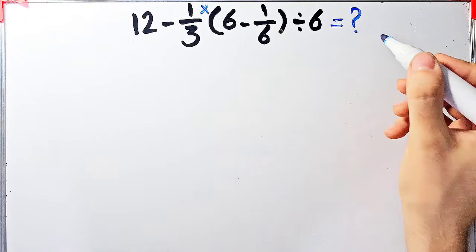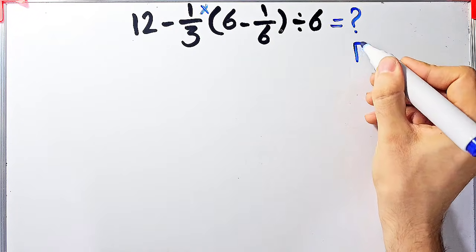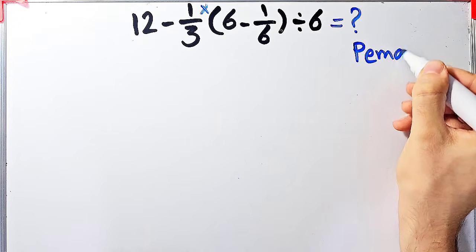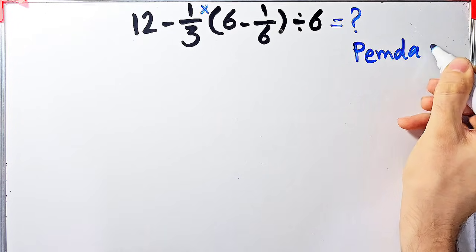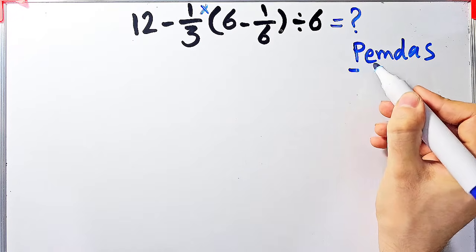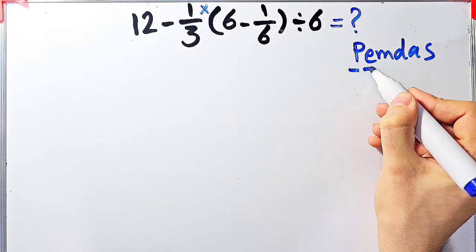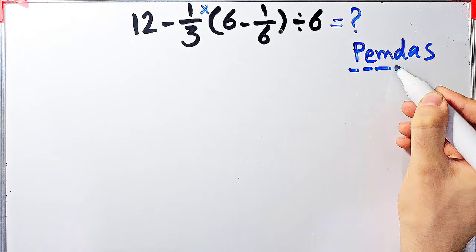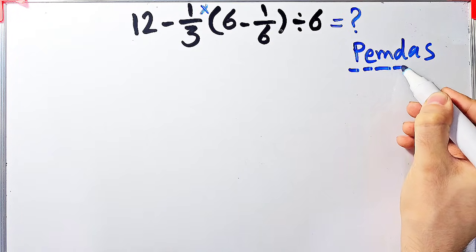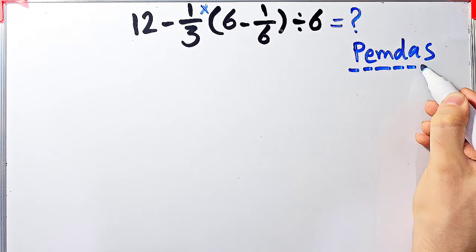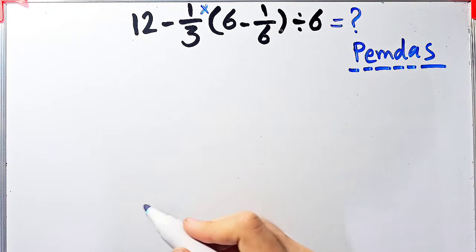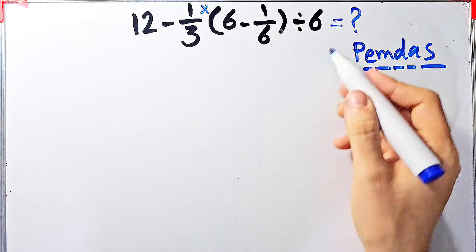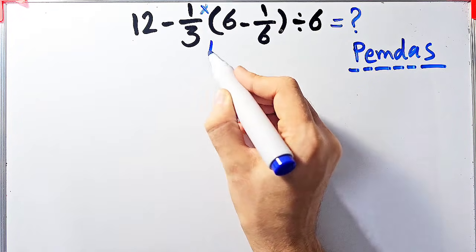To solve this question we need to follow the order of operations, which is PEMDAS. PEMDAS shows the priority of the mathematical operations: parentheses, exponent, multiplication, division, addition, and subtraction.